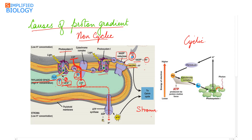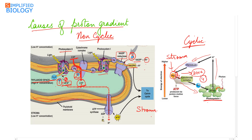In cyclic photophosphorylation, only photosystem 1 is involved. When photosystem 1 gets excited, it passes electrons to ferredoxin, then to plastoquinone. Plastoquinone gets reduced by taking protons from the stroma, separates the protons releasing them into the thylakoid lumen, and allows electrons to pass through the cytochrome complex, plastocyanin, and back to photosystem 1. This is the fourth reason for a proton gradient. So there are four reasons in total across non-cyclic and cyclic photophosphorylation.